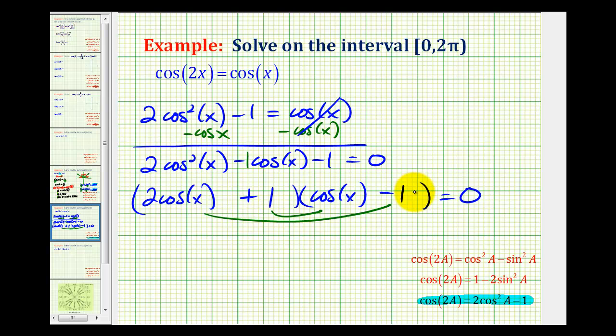Now that we have this factored, if either of these factors are equal to 0 this equation will be true. So either 2cos(x) + 1 = 0 or cos(x) - 1 = 0.